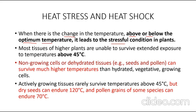When plants are exposed to a temperature above or below the optimum temperature, it leads to stressful conditions. Many higher plants are unable to survive extended exposure to temperatures above 45 degrees centigrade. However, many dehydrated tissues and non-growing tissues such as seeds and pollens are able to survive much higher temperatures than hydrated or actively growing tissues.